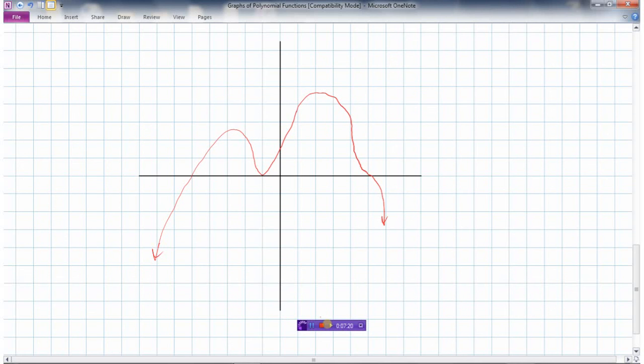Let's see what we can say about this polynomial function graphed here. Well, we can say 1, 2, 3, 4. This is negative 5. This is negative 1. And this is 1, 2, 3, 4. This is positive 5.